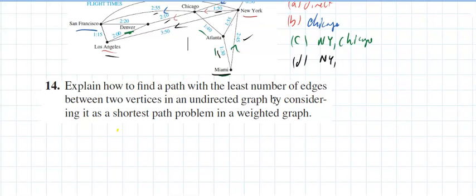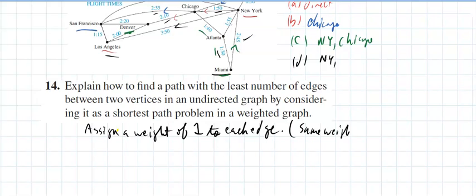Explain how to find a path with the least number of edges between two vertices in an undirected graph by considering it as the shortest path. That's really easy, just assign a weight, make them all the same. Assign a weight of one to each edge, or assign the same weight to all the edges, then that will solve the problem. You would really take the shortest path, and with the weighted graph, that would be the shortest. That's pretty much it for this section. Thank you.